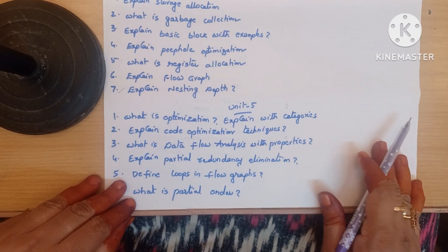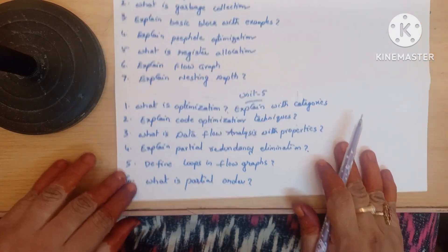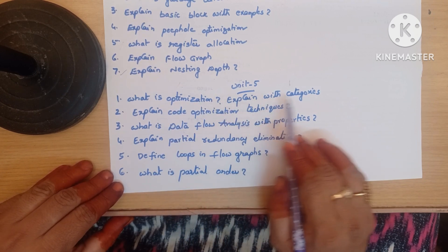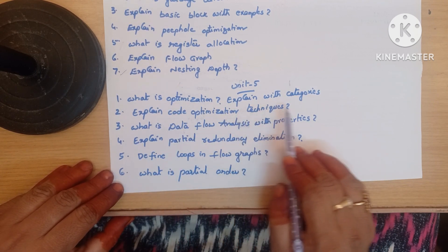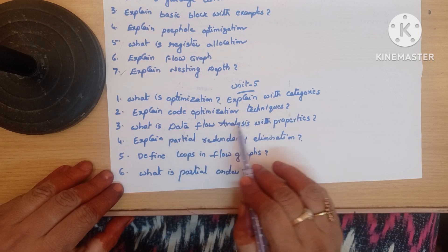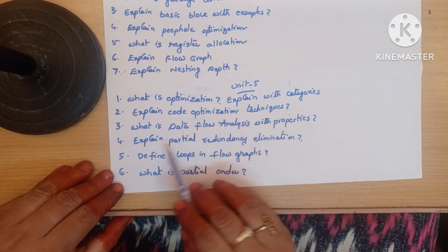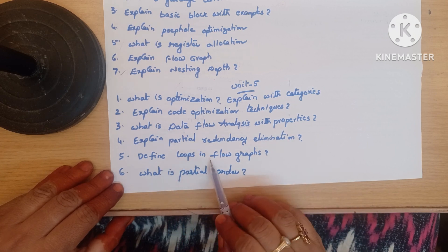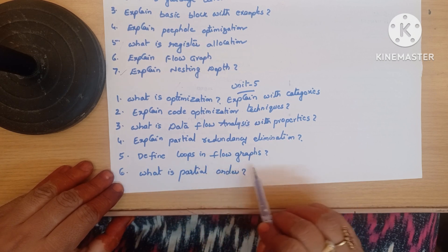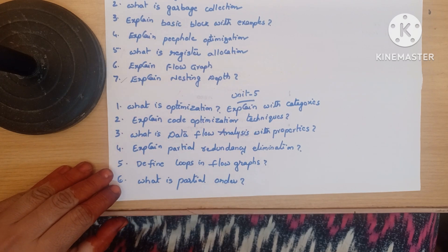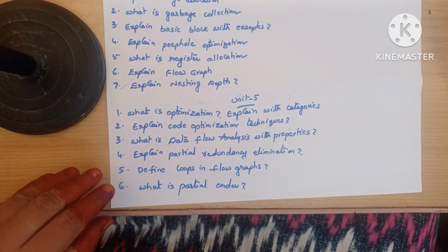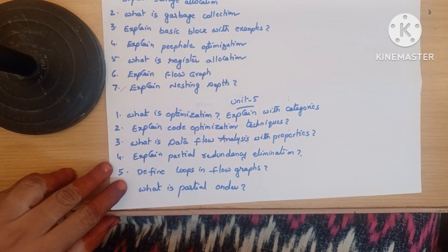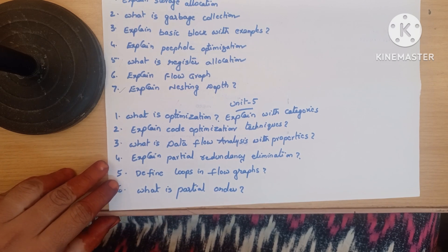Last unit important long answer questions: what is optimization — explain with categories, explain code optimization techniques, what is data flow analysis with properties, explain partial redundancy elimination, define loops in flow graphs, what is partial order. These are all the essay-type questions in Compiler Design.